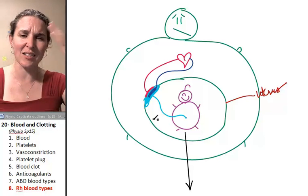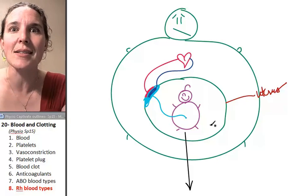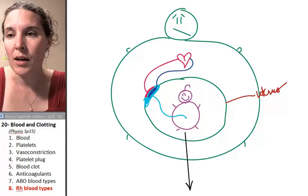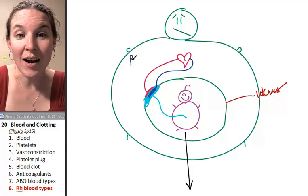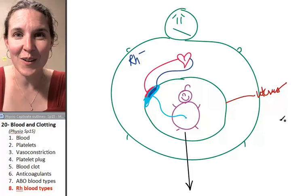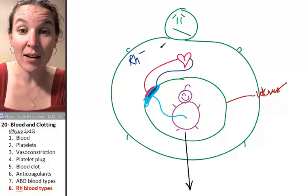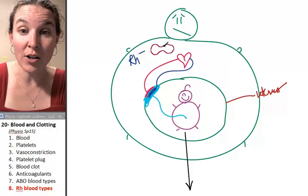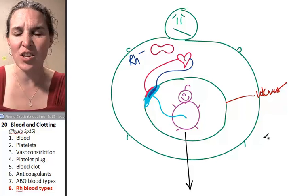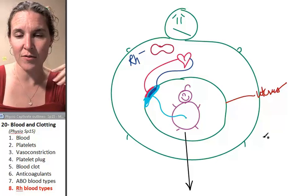Who cares? Like, seriously, nobody cares unless mama is RH negative. That means she does not have anti-RHs on her red blood cells. Let's just say she's O negative for the ease of life.